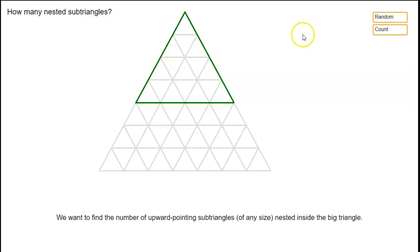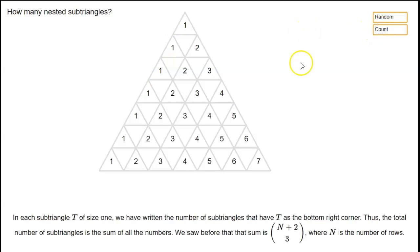So how can we count these? Well, let's have a look like this. Have a look at this triangle that we've highlighted here and it's got a 2 in it. Why's it got a 2? That's because there's two different triangles that have this highlighted triangle as the bottom right corner.